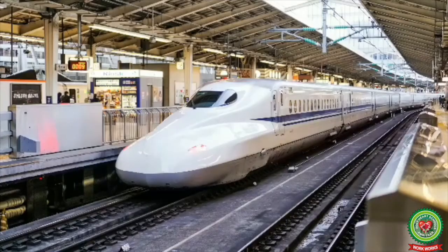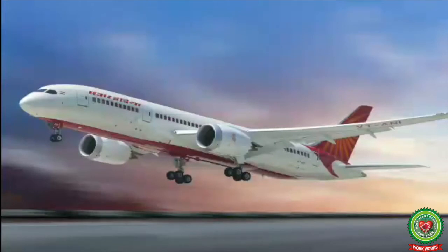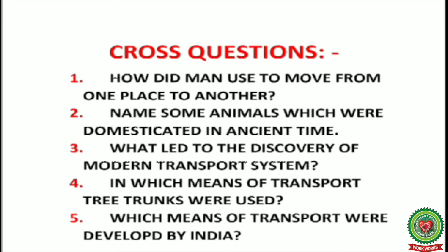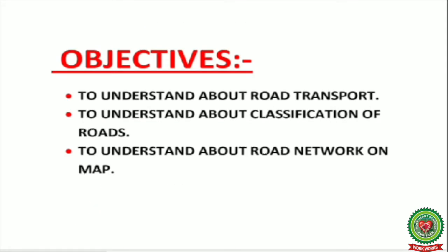India has a well-developed network of roads, railways, waterways, and airways. Here are some review questions: first, how did men used to move from one place to another? Second, name some animals which were domesticated in ancient times. Third, what led to the discovery of the modern transport system? Fourth, in which means of transport were tree trunks used?